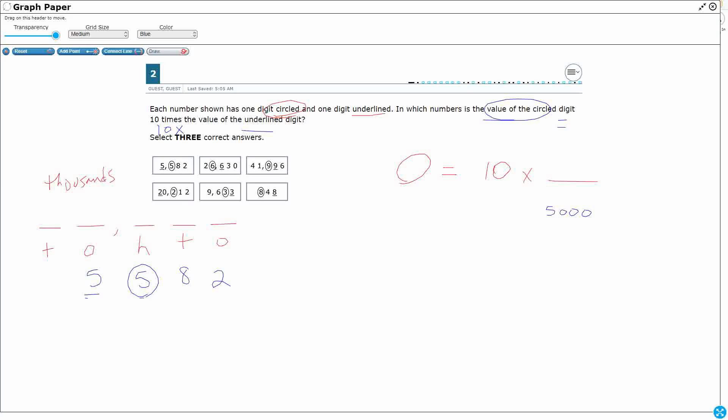The circled is in the hundreds place. So that's going to be a 500. So does 500 equal 10 times 5,000? No. If they were to flip those, we'd be fine. That's what we're supposed to do here.